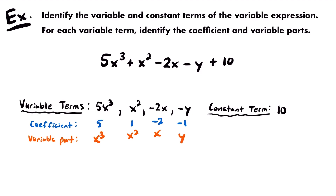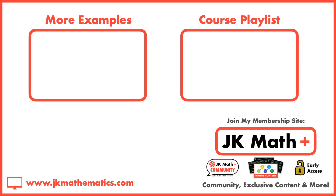In each case, if you're not sure if your answers are correct, you can always multiply the two parts that you identified together and you should get the original variable term: 5 times x cubed is 5x cubed, 1 times x squared is x squared, negative 2 times x is negative 2x, and negative 1 times y is negative y. That is it for this first lesson of algebra. If you want more practice, feel free to check out the examples video linked on screen. If you have any questions, please leave those in the comments. I will see you next time.